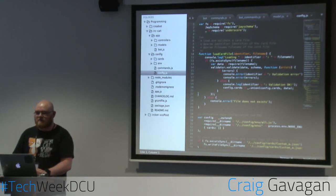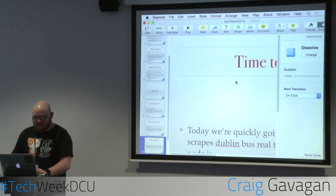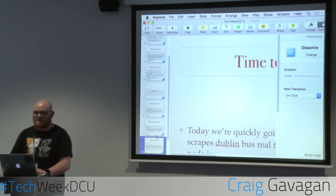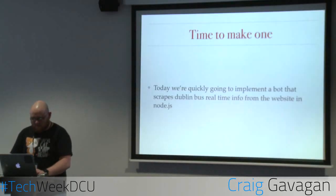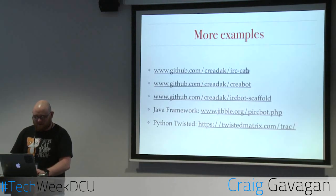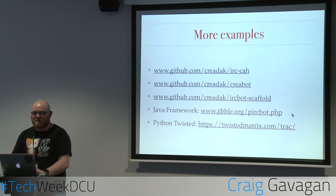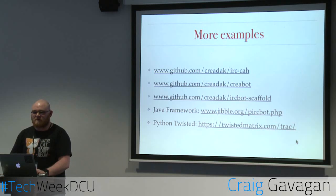I guess that's pretty much all I wanted to talk about — I just wanted to give an overview of why you would implement these weird things you see insulting people in lobby, and explain that they're not actually real people and not actually insulting you. There are some more examples up on my GitHub: the Cards Against Humanity bot, the Dublin Bus bot, the scaffold, a Java framework for writing bots, and a Python one if you're so inclined. There's also the Bots channel — if you ever want to write one, ask a question, or have an idea, please feel free to give me a shout.